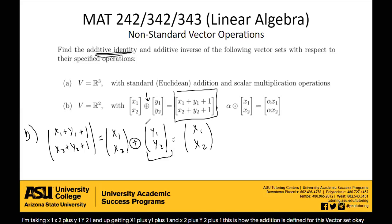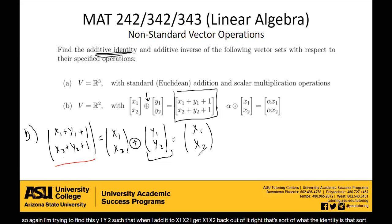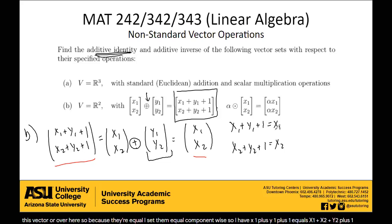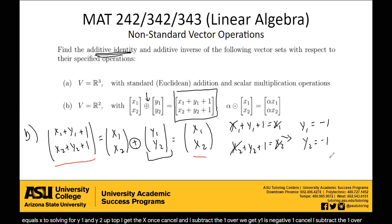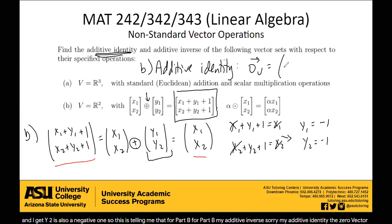I'm trying to find y1, y2 such that when I add it to x1, x2, I get x1, x2 back. The identity doesn't change my vector when I add it. Setting components equal: x1 plus y1 plus 1 equals x1, and x2 plus y2 plus 1 equals x2. Solving: the x1s cancel, subtract the 1 — y1 is negative 1. Similarly, y2 is also negative 1. So for Part B, my additive identity, the zero vector in this case, is negative 1, negative 1. Not 0, 0 like we're used to.